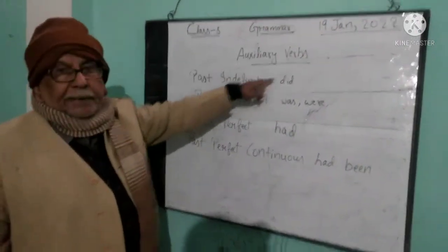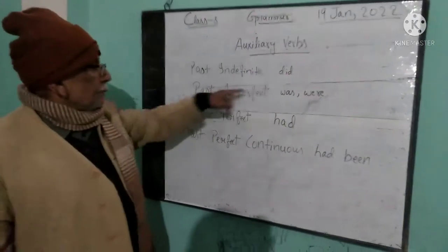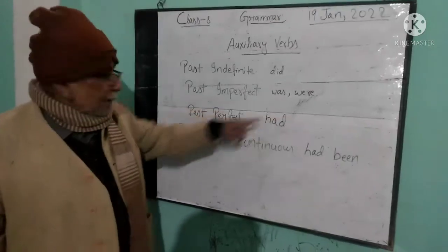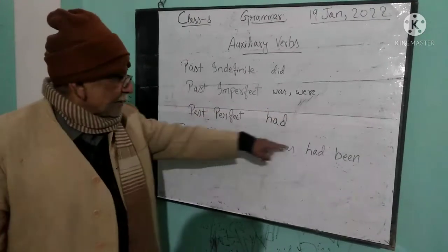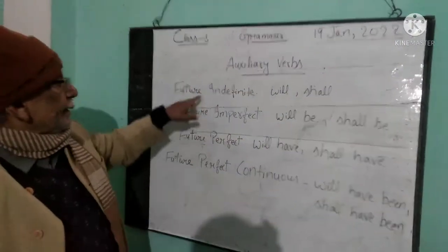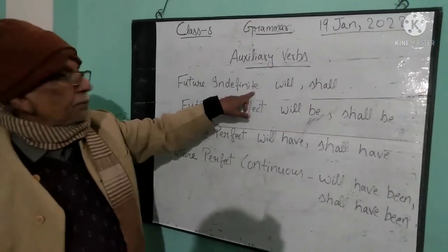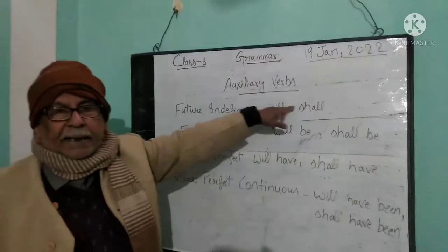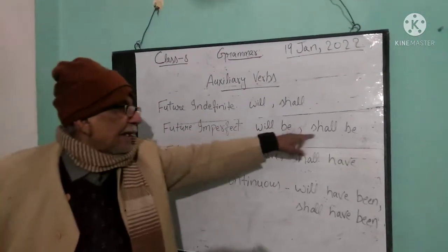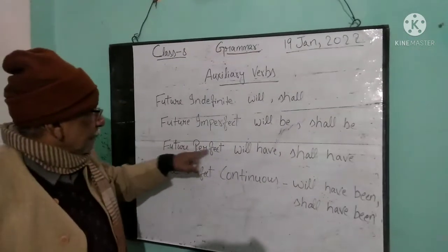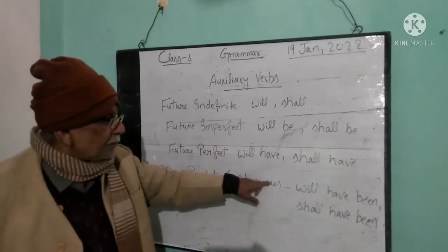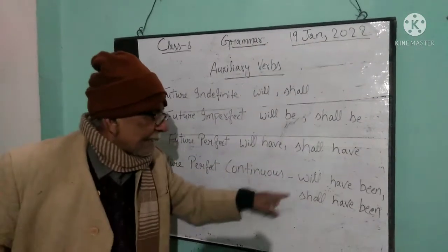Past indefinite uses 'did.' Past imperfect uses 'was/were.' Past perfect uses 'had.' Past perfect continuous uses 'had been.' Future indefinite uses 'will/shall.' Future perfect uses 'will have/shall have.' Future perfect continuous uses 'will have been/shall have been.'